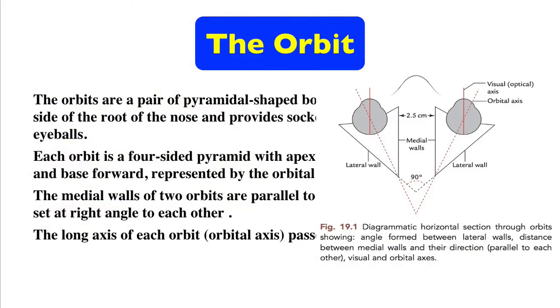In this chapter, I will discuss the orbit and the eyeball in detail. I start now with the bony orbit. The orbits are a pair of pyramidal-shaped bony cavities located on either side of the root of the nose, and provide a socket for rotatory movement of the eyeballs.